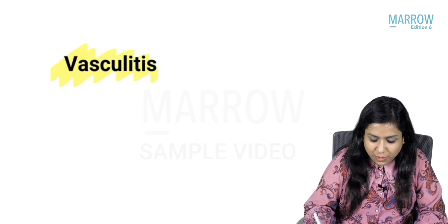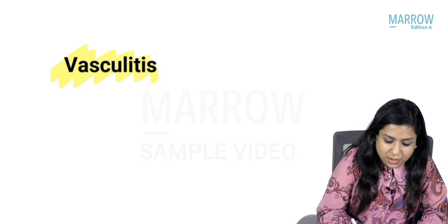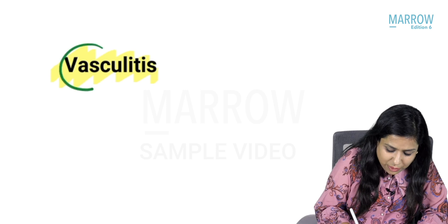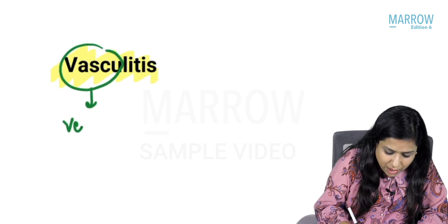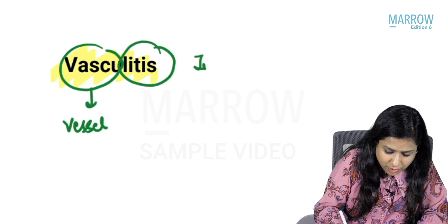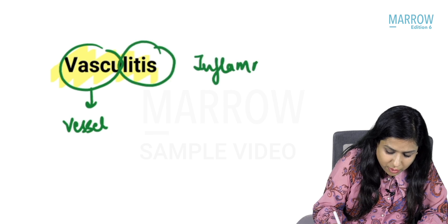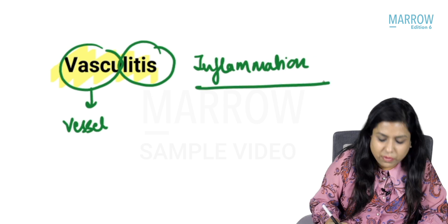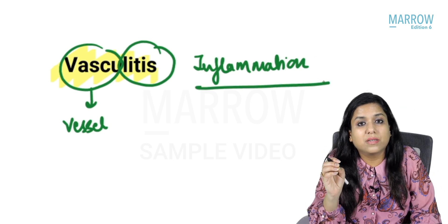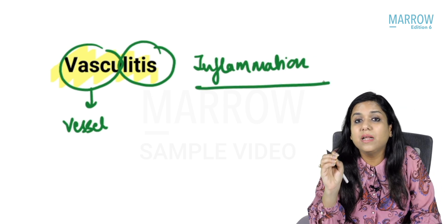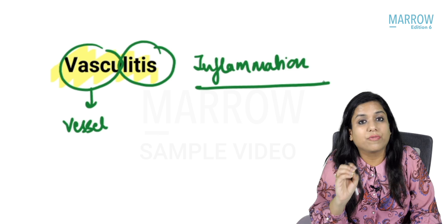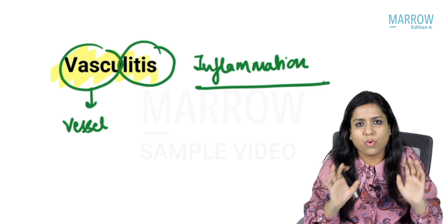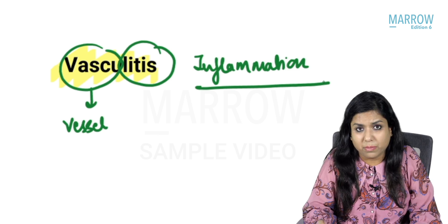What is vasculitis? 'Vascul' means a vessel and 'itis' means inflammation. So vasculitis is inflammation of the vessel wall.